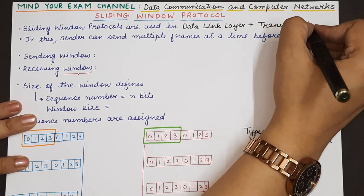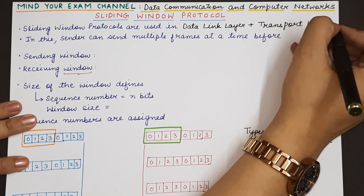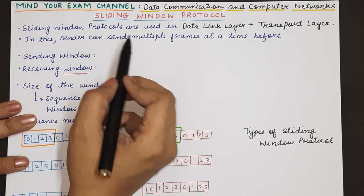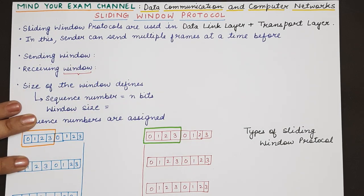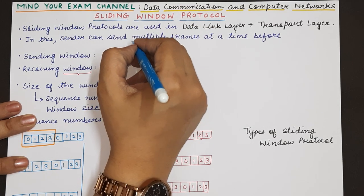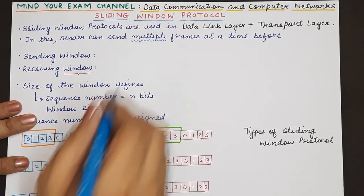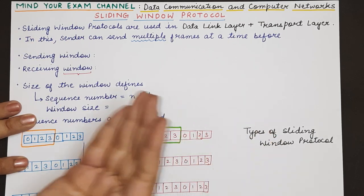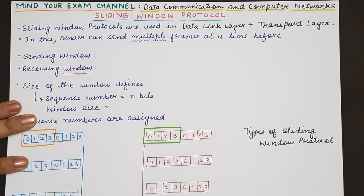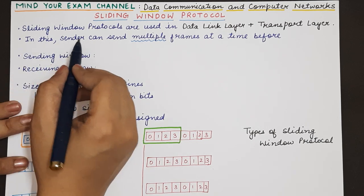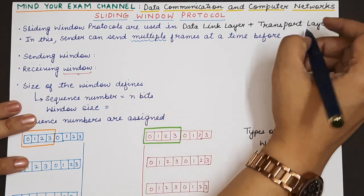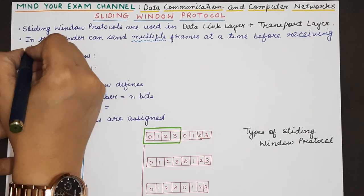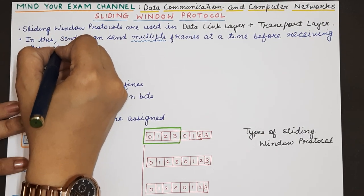Sliding window protocols are named so because in this, the sender can send multiple frames without waiting for the receiver to give any particular feedback. In stop and wait, the sender sends one frame and then waits for the acknowledgement from the receiver. But in this scenario, the sender can send multiple frames at one time before receiving the first acknowledgement.